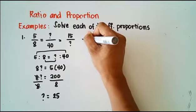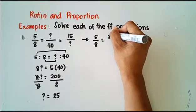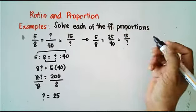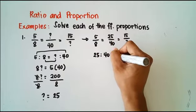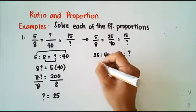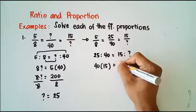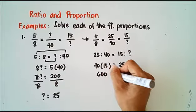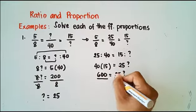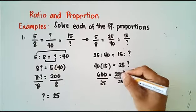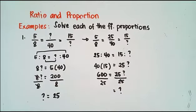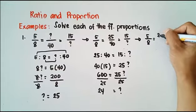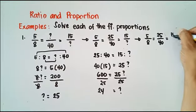Then we now have 5 over 8 equals 25 over 40 equals 15 over question mark. Let's take any two: 25 is to 40 is equal to 15 is to question mark. So 40 times 15 equals 25 times question mark. 40 times 15 is 600, which equals 25 times question mark. Divide both sides by 25 — question mark equals 24. So 5 over 8 equals 25 over 40 equals 15 over 24.